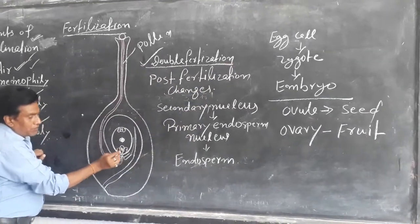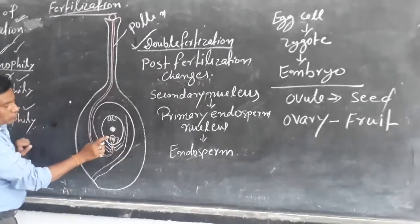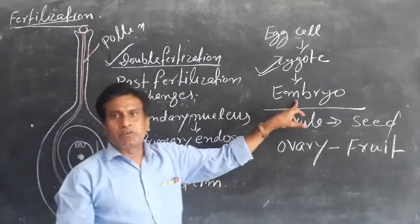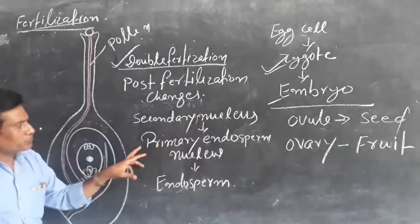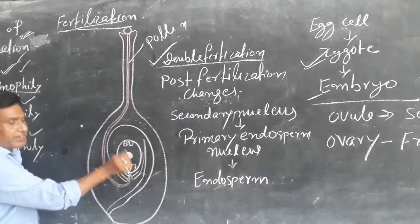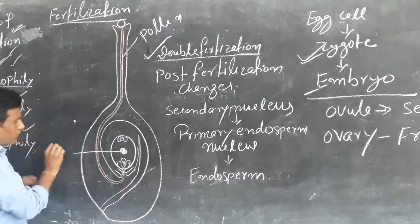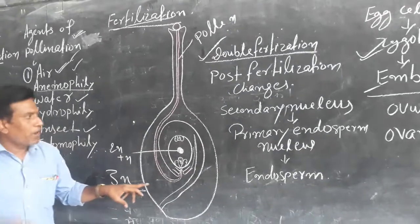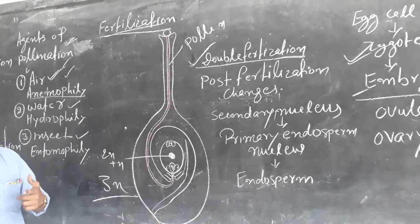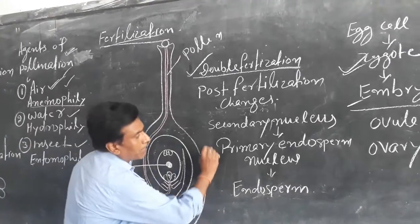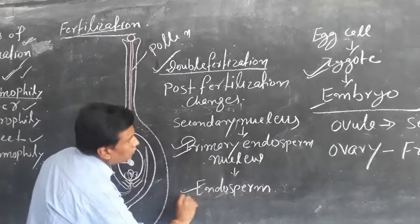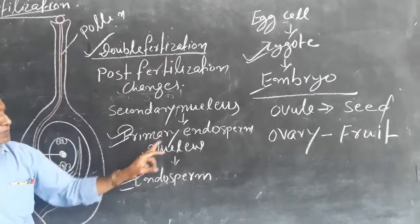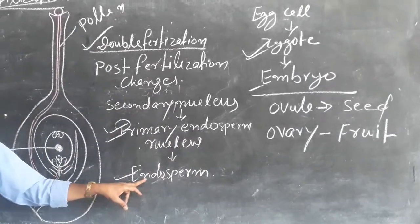One of the male gametes fuses with the egg cell and forms a zygote, and the zygote develops into an embryo. Now, the secondary nucleus — after fusion with the male gamete, it becomes triploid. After fertilization, it develops into the primary endosperm nucleus, and this primary endosperm nucleus develops into the endosperm.